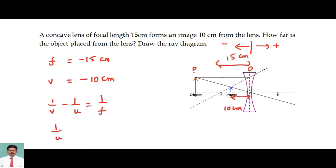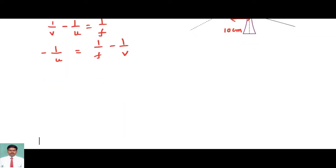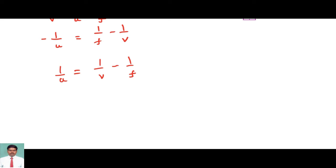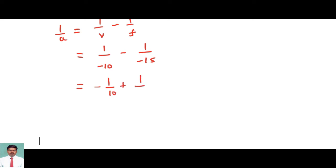I want to calculate 1/U, so -1/U = 1/F - 1/V, then 1/U = 1/V - 1/F. Now I am going to substitute the value of the focal length and the position of the image. This is equal to -1/10 + 1/15, so that is equal to (-15 + 10)/150 = -5/150.